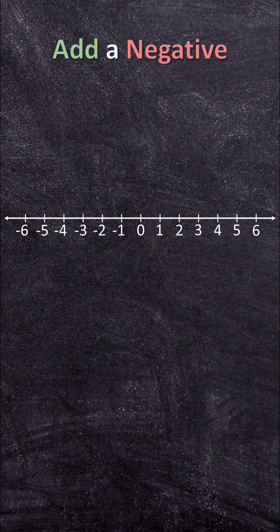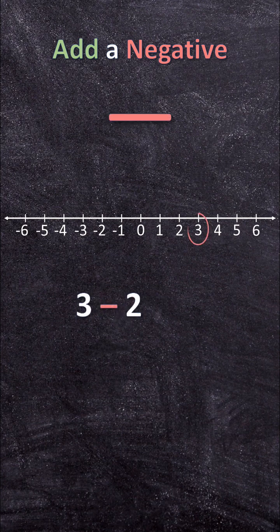When we add a negative, we're going to subtract. For example, 3 plus negative 2 — we start at 3, we subtract 2, and end with 1.